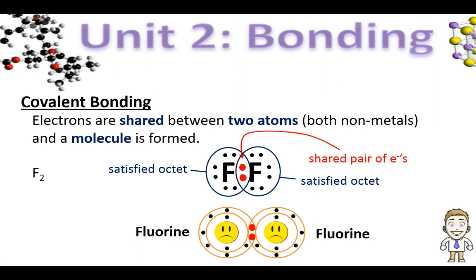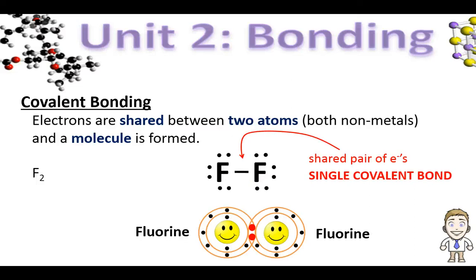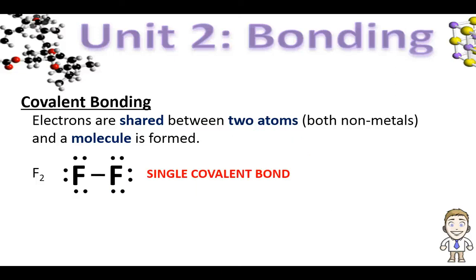Same thing for the fluorine on the right. The point of this satisfied octet is that both atoms are now chemically stable with noble gas configurations. Normally when we draw these, we don't represent that shared pair of electrons with two big red dots — it's usually with a single straight line. That straight line is called a single covalent bond. It's also worth mentioning that what we've drawn right here is called a Lewis dot structure. So we now have the Lewis dot structure for F2 with a single covalent bond.